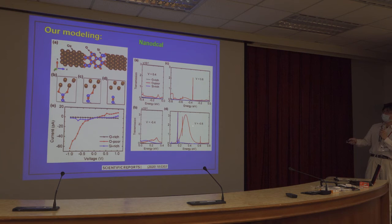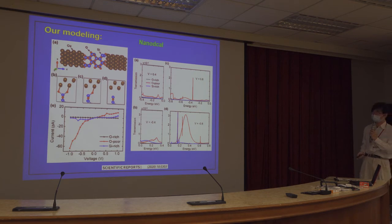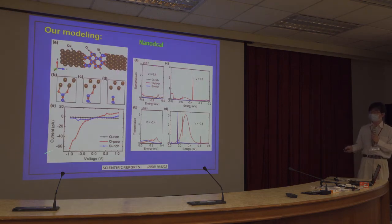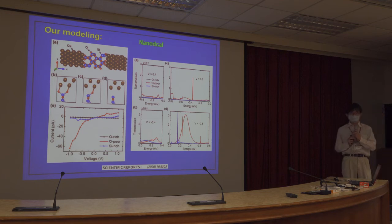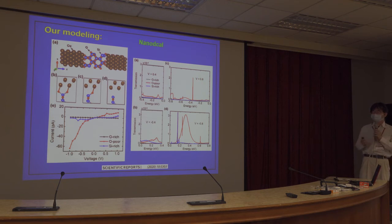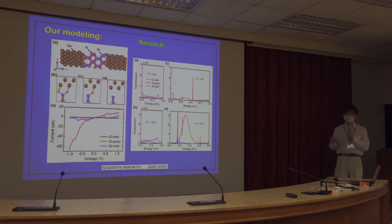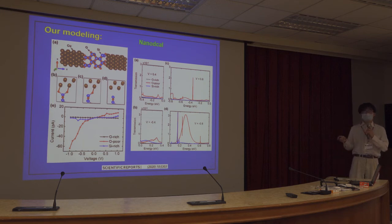At 0.4V, the area under the transmission curve indicates current flow. At 0.8V, the area increases further, so current becomes larger. At -0.8V, the area increases even more, so current is larger than at +0.8V. The leakage current under small voltage is important for industry. Another industrially important quantity is the dielectric strength — how large a voltage causes the insulator to break down. To calculate breakdown properly requires applying very large bias and computing current, which is beyond current computational resources, so we instead examine the equilibrium transmission spectrum as an approximation.